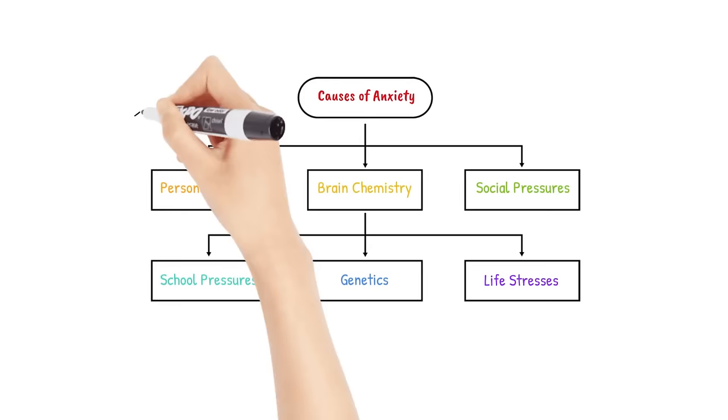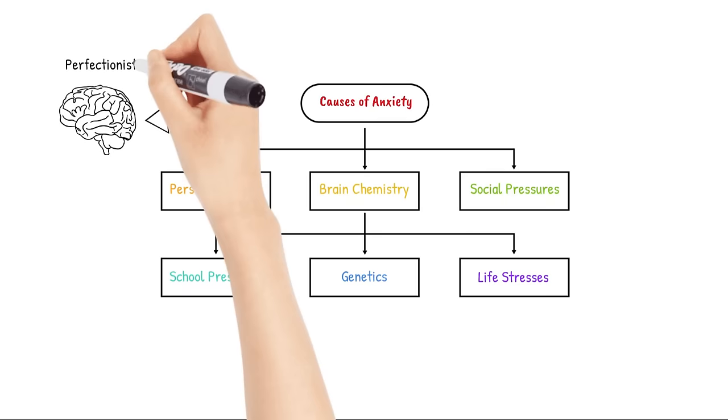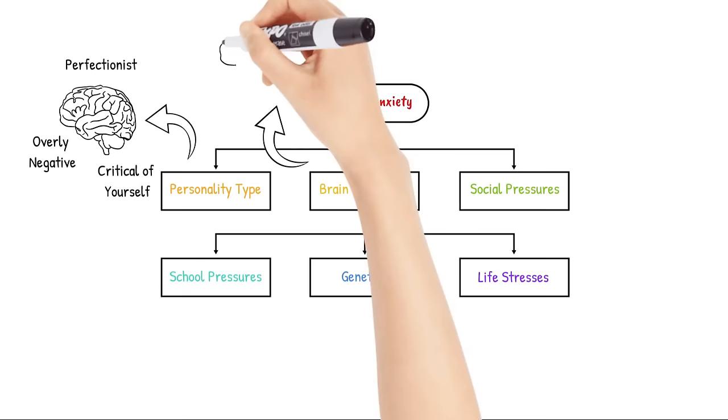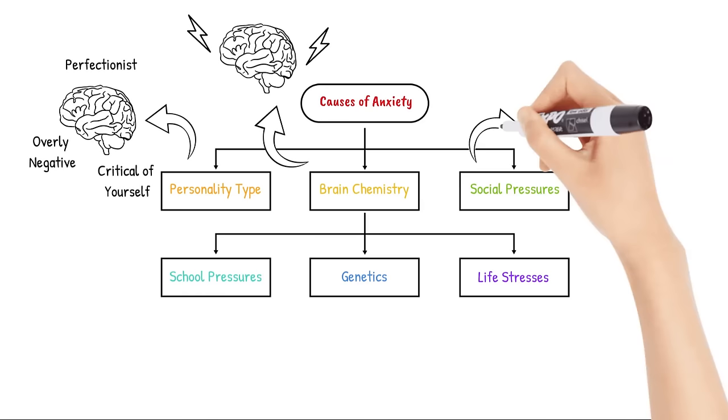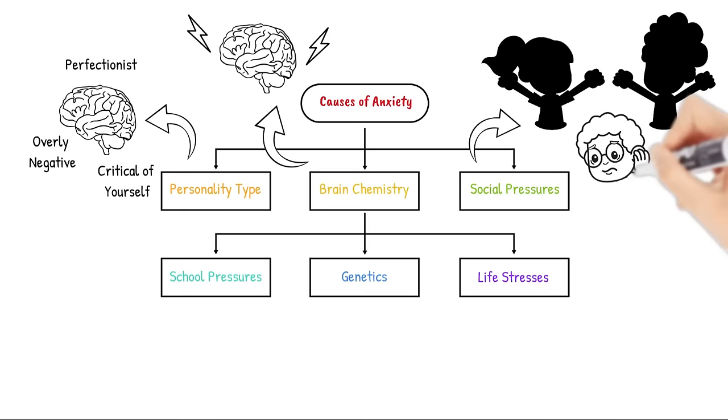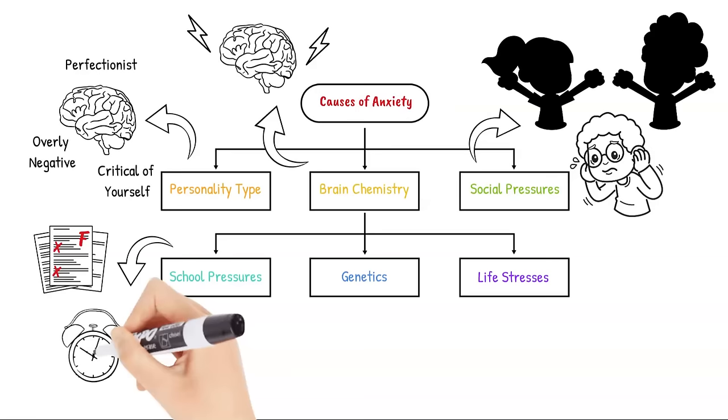Personality types that contribute to anxiety might include being a perfectionist, being overly negative, or being critical of yourself. Sometimes chemicals in our brain misfire, causing anxiety. Social pressures include negative peers, feeling like you don't fit in, or being judged by others. School pressures include grades, parent or teacher expectations, not enough time, or trouble understanding or keeping up with schoolwork.